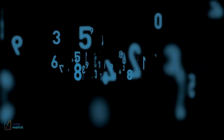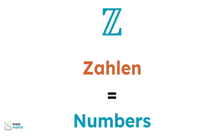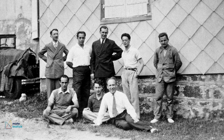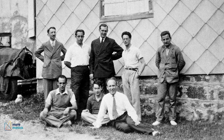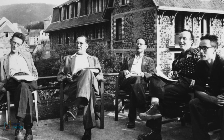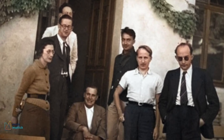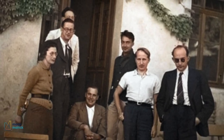But where did this symbol come from, and why do we use it? The notation Z comes from the German word zahlen, meaning numbers. This usage was popularized in the early 20th century by German-speaking mathematicians. The use of Z to denote integers was further popularized by the Bourbaki group, a collective of primarily French mathematicians who aimed to reformulate mathematics on an extremely abstract and formal basis. This group was active during the mid-20th century and had a significant influence on modern mathematical notation.